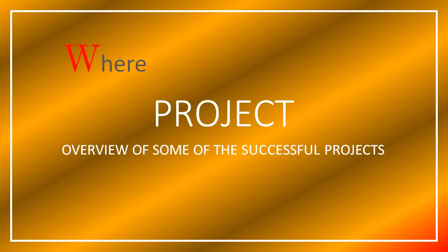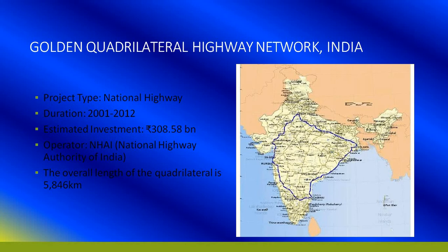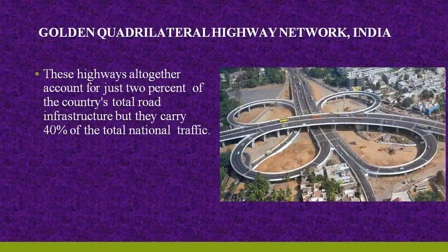Here is an overview of some successful PPP projects currently ongoing. The Delhi-Meerut Expressway, a 150-kilometer project, is currently underway. The Vadodara-Mumbai Expressway is also ongoing. The Special Accelerated Road Development Programme for the North Eastern region is also in progress. The Golden Quadrilateral Highway Network, connecting Delhi, Mumbai, Chennai, and Kolkata, is also under PPP. It is a National Highway project running from 2001 to 2012 with an estimated investment of ₹308.58 billion under the National Highway Authority of India. The overall length of the quadrilateral is approximately 5,846 kilometers, and while these highways account for just 2% of the country's total road infrastructure, they carry 40% of the total national traffic.